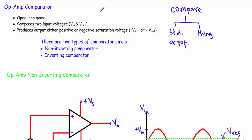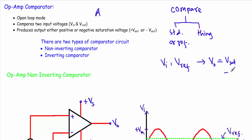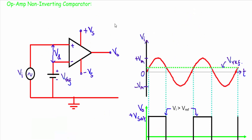Because the operational amplifier is in open-loop mode with its high gain A, the output voltage will be either in positive saturation or negative saturation. So an operational amplifier comparator takes two inputs — the input voltage V_I and a known reference voltage — and produces an output that is either at positive saturation or negative saturation. The op-amp comparator is classified into two types: the non-inverting comparator and the inverting comparator.